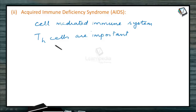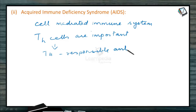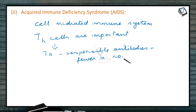Now if the T helper cells, which are responsible for the production of antibodies — as you should remember from the previous session — are fewer in number, they are not able to produce antibodies for all infections. This results in a weakening of the natural defense of the body.